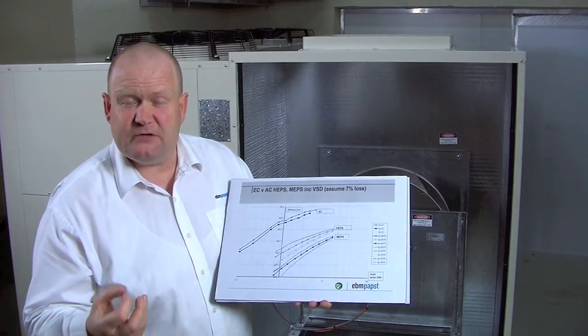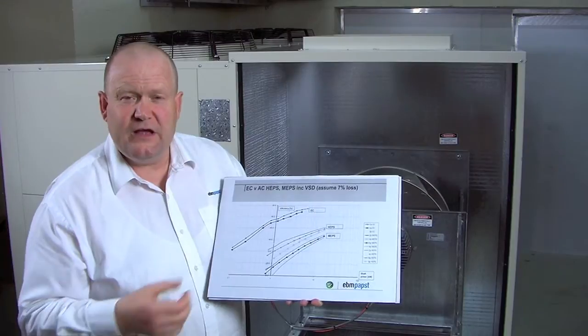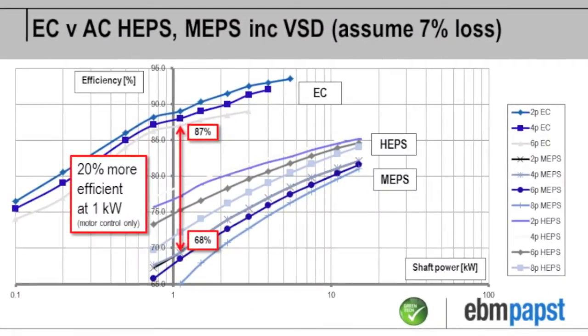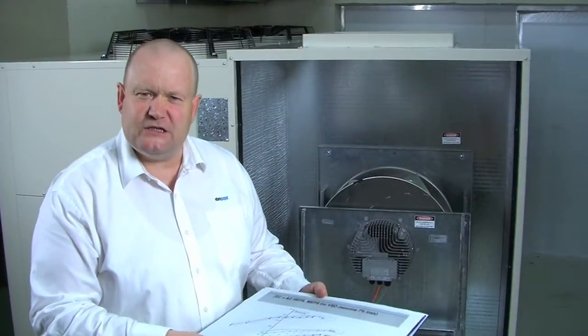EC is a permanent magnet motor with inbuilt speed control. And here you can see that the EC motor is between 15 and 20 percent more efficient than the AC VSD couple. Now that's really important as a drive mechanism in increasing energy efficiency.